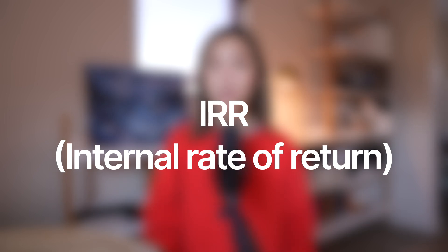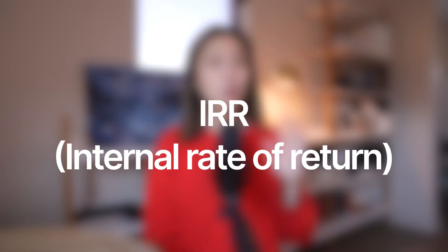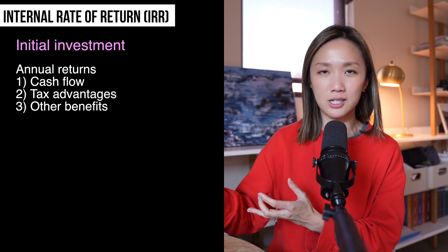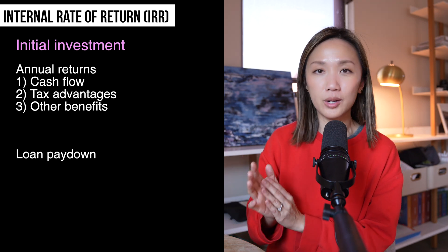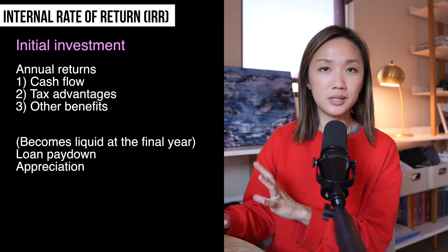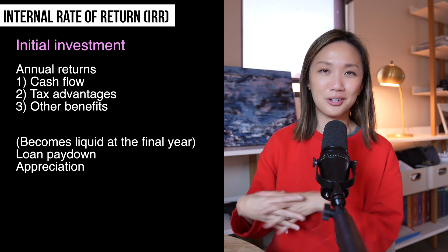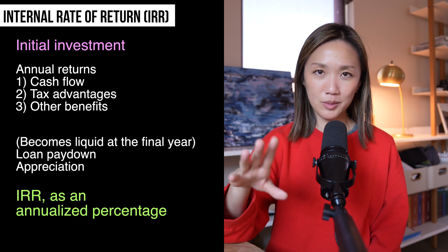Now, how do you take all of these different metrics into account and come up with some sort of a percentage that compares apples to apples — like this rental investment property versus another property or a completely different thing like a straightforward index fund? There are two methods: one with math and one without. Let's start with the mathematical option. You can use a metric called IRR, or internal rate of return. When I first heard of this, I struggled to find anyone explain it in simple terms. But basically, you factor in how much you're putting into this investment, your annual returns in terms of cashflow and any of the tax benefits, other bonuses you're getting, and also the loan pay down and equity gain from appreciation, which become liquidated in that final year in a hypothetical sale. It takes all these numbers together and turns it into an annualized percentage.